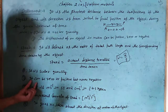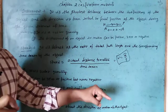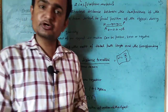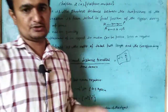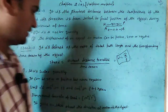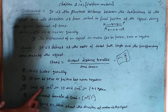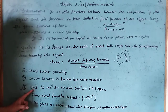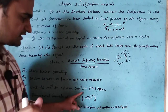Next point: speed can be zero or positive, but never negative. If an object is at rest, the speed can be zero; otherwise it is positive, but it is never negative. The unit of speed in the SI system is meters per second, and in the CGS system it is centimeters per second.